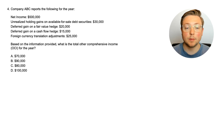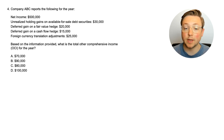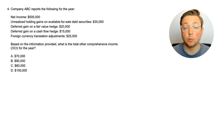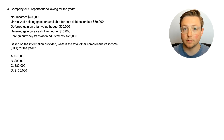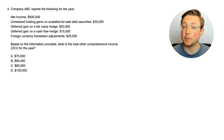Here we are at question four. Company ABC reports the following for the year: net income of $500,000; unrealized holding gains on available-for-sale debt securities of $30,000; deferred gain on a fair value hedge of $20,000; deferred gain on a cash flow hedge of $15,000; foreign currency translation adjustments of $25,000. Based on this information, what is included in other comprehensive income for the year? We haven't talked about hedges yet, so we'll cover how those affect this.